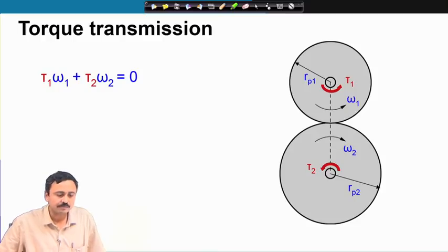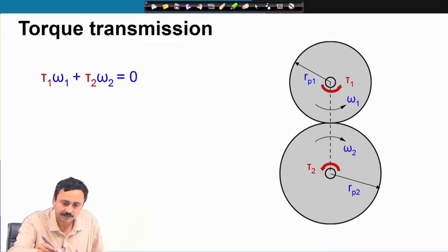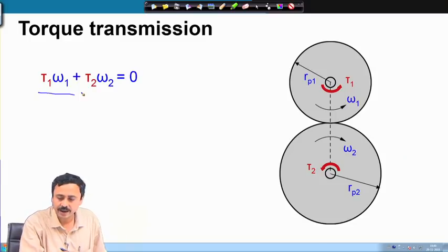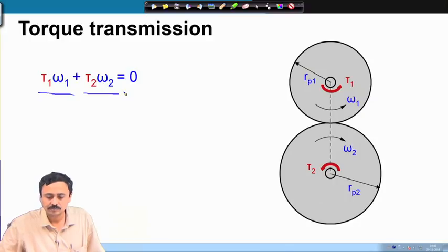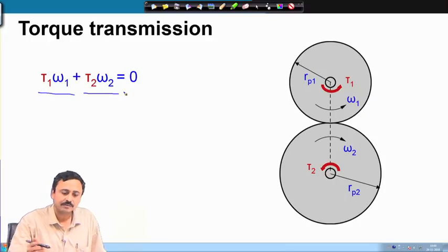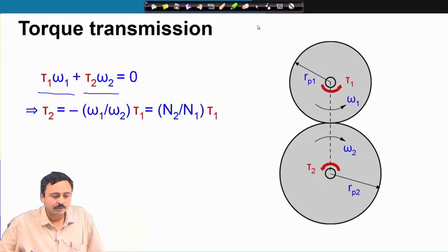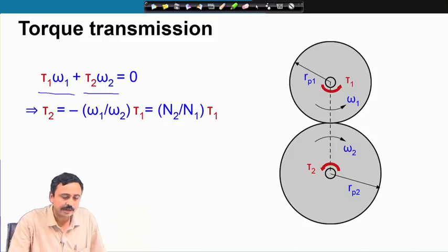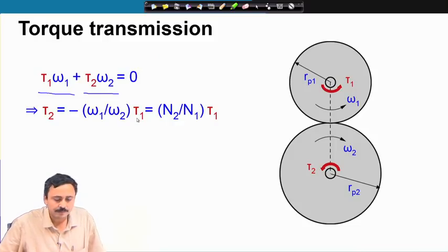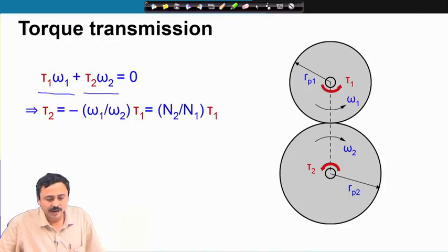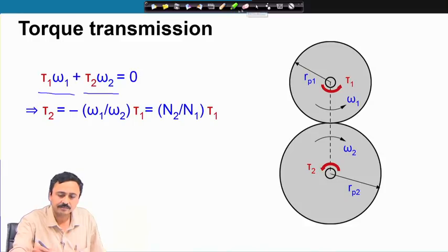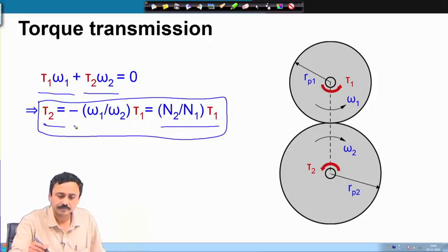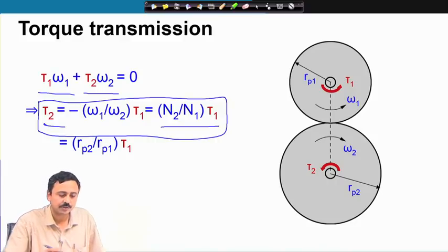For torque transmission, using the principle of virtual work and power balance: the rate of work done at gear 1 plus the rate of work done at gear 2 must vanish. This gives τ₂ related to τ₁ through the transmission ratio. Since ω₁/ω₂ = −n₂/n₁, the torque transmission ratio can be expressed accordingly, and it can also be related in terms of the pitch circle radii.